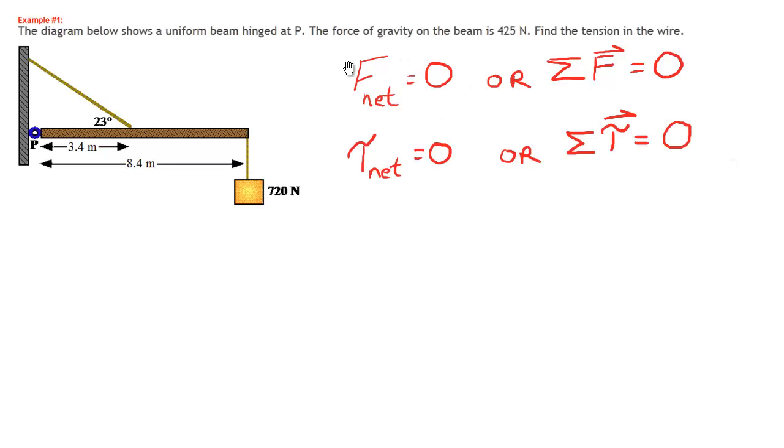Now we know that when F net is zero, that's the condition for translational equilibrium. It simply means that the object is not accelerating. We also know that when the torque is zero, the object is not rotating, so therefore it's in rotational equilibrium. When all are true, in other words the object is not moving at all, we call that static equilibrium.